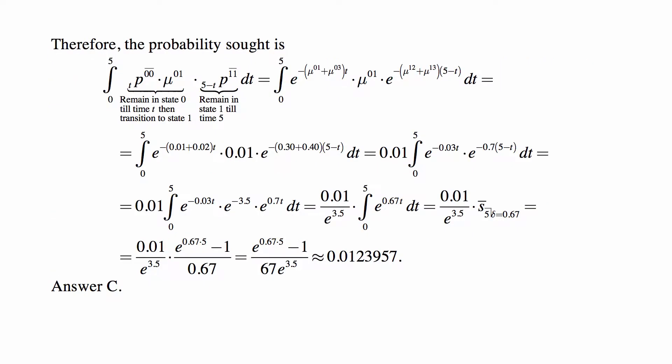So the probability set is a continuous model. We simply take the integral from 0 to 5. We take the integral with a continuous model. And then in there, what we're looking for is that we're looking at the probability that the person remains in state 0 till time t, from time 0 till time t, and then transitions to state 1.